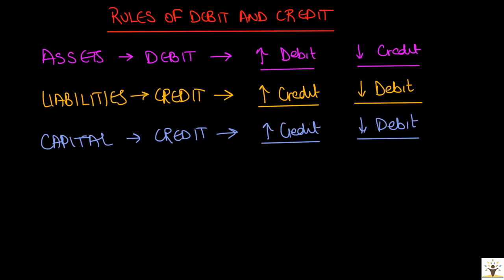These rules of debit and credit can be further extended and applied to incomes and expenses of the business. If you remember from the previous lecture, profit and capital have a direct or a positive relation. Profit is calculated as incomes less expenses. So, we can say that incomes and capital have a direct relation, whereas expenses and capital have an indirect relation. So, whatever applies for capital also applies for income.